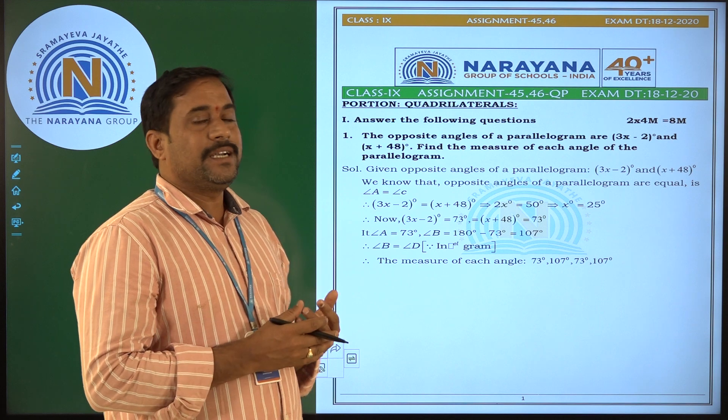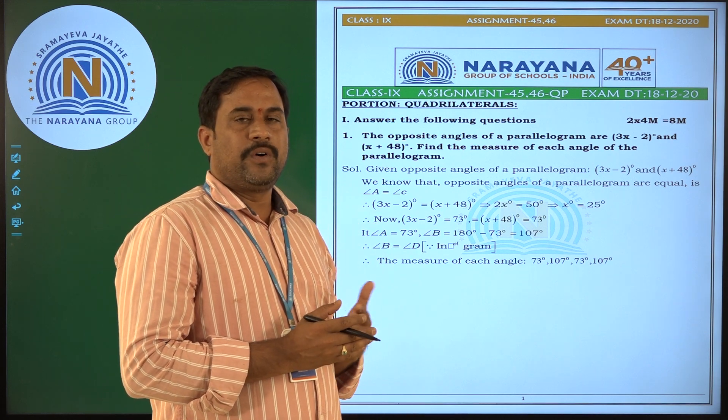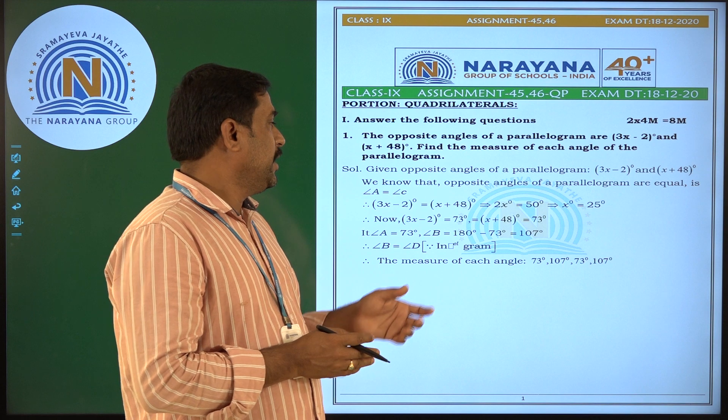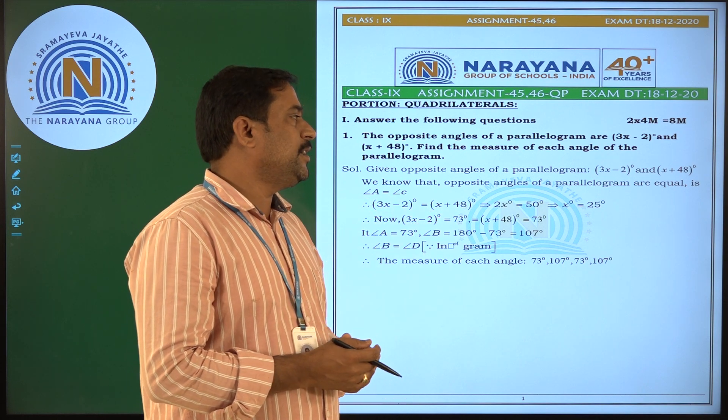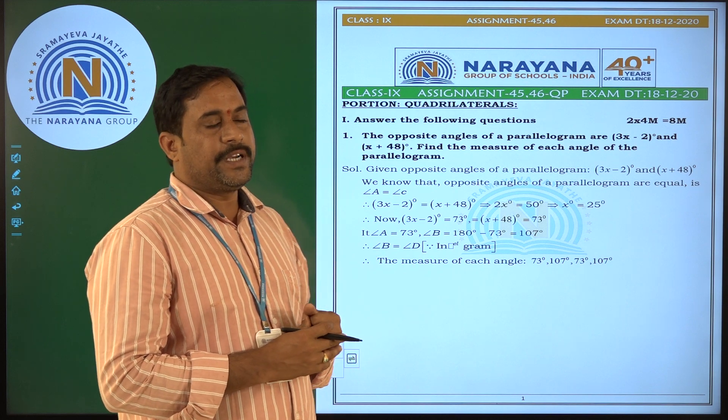We know that opposite angles of a parallelogram are equal. Using that condition, 3x minus 2 equals x plus 48, so 2x equals 50.